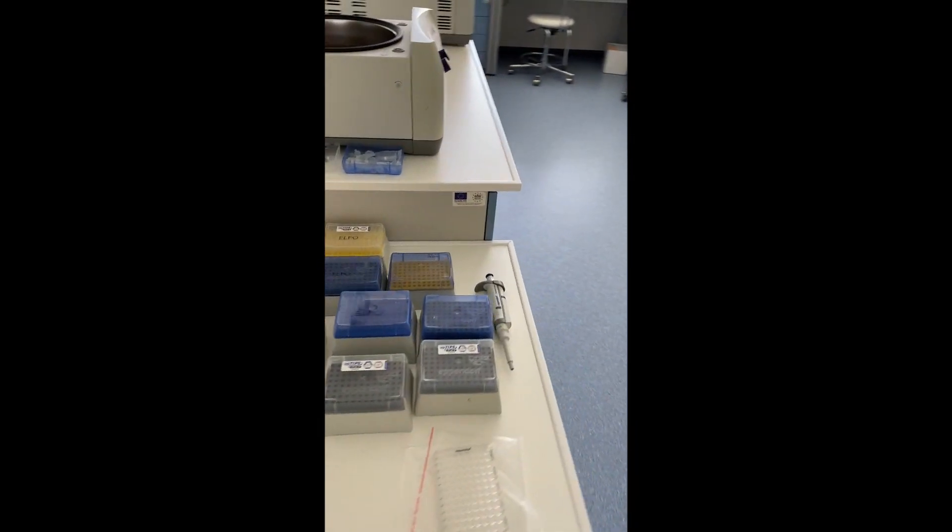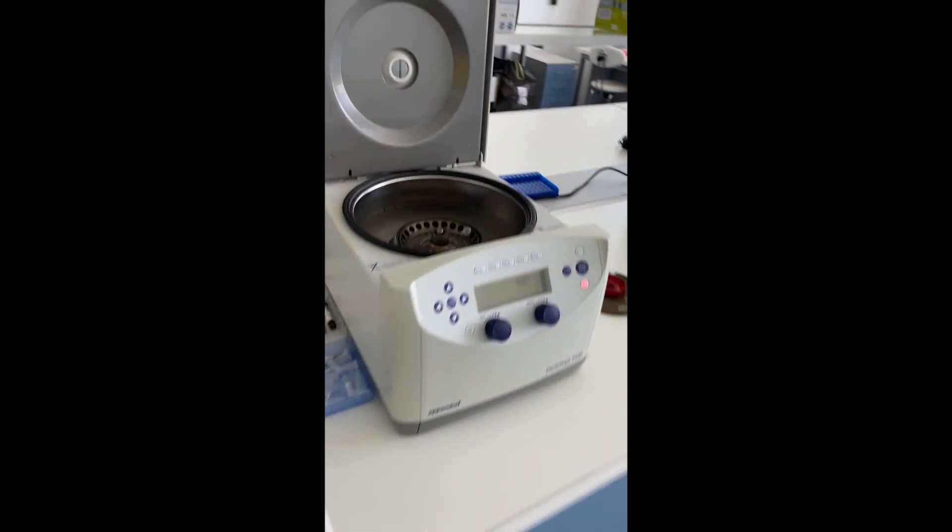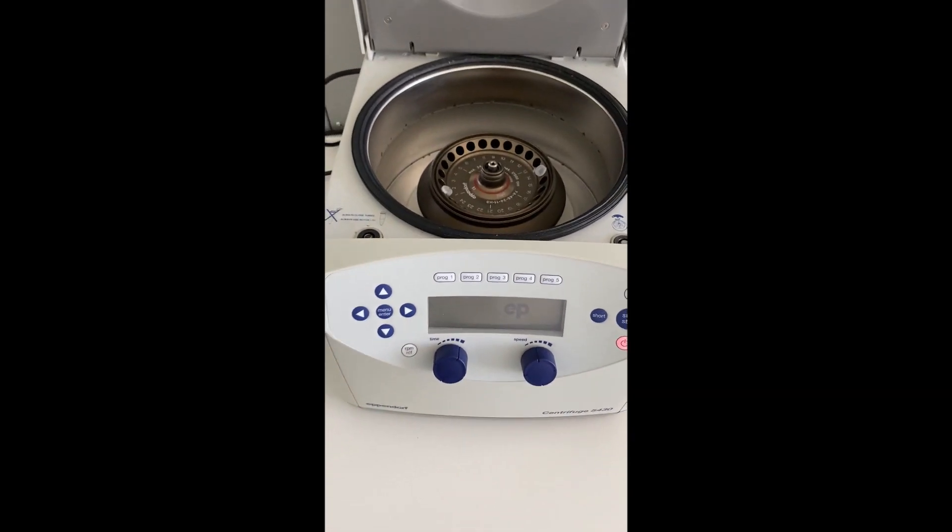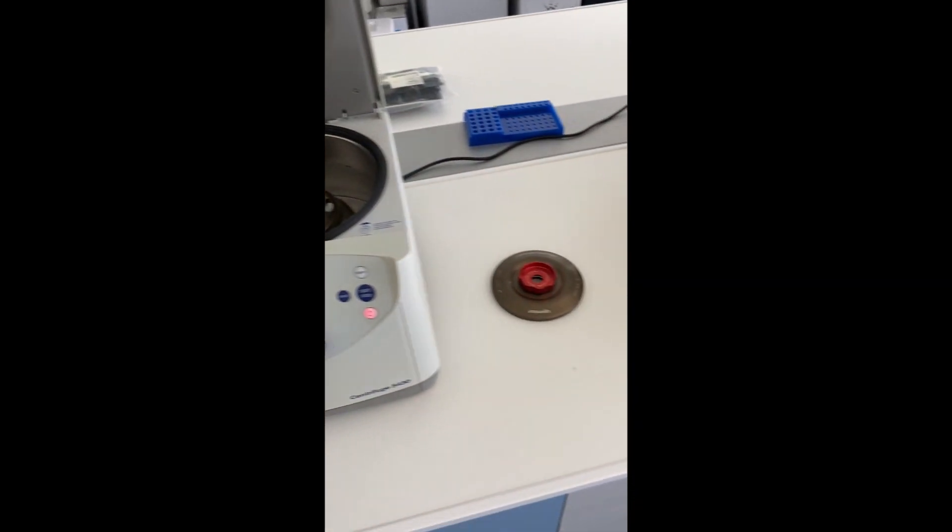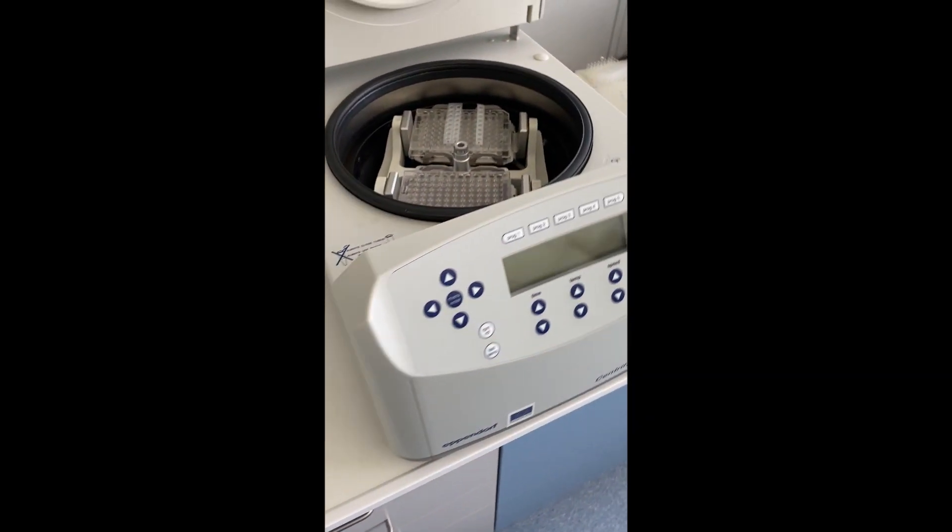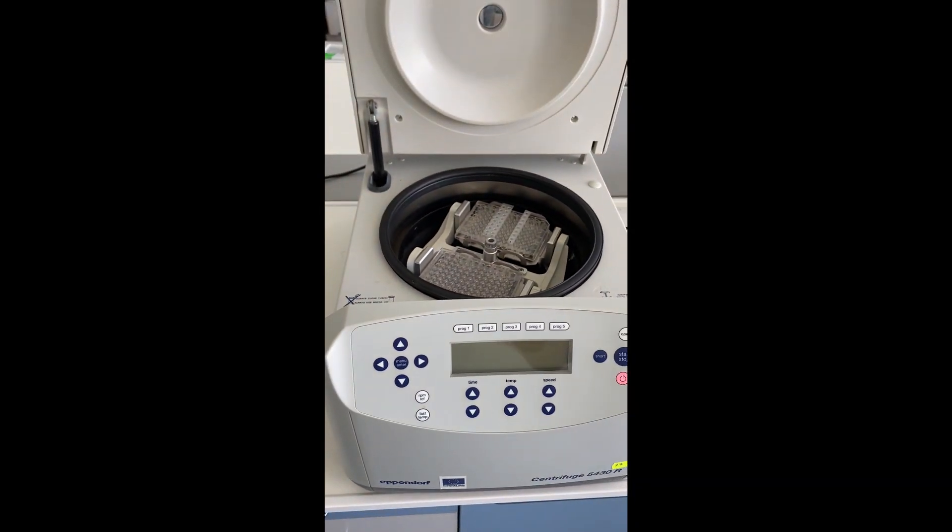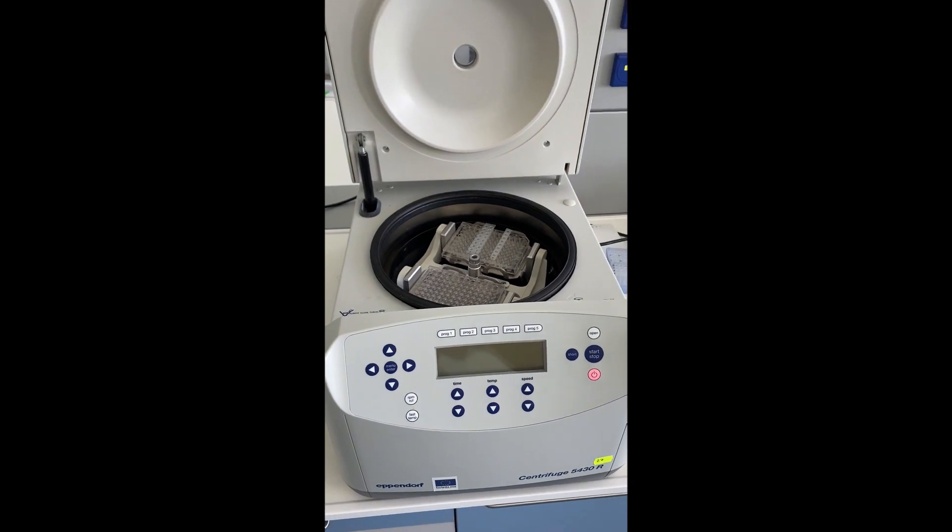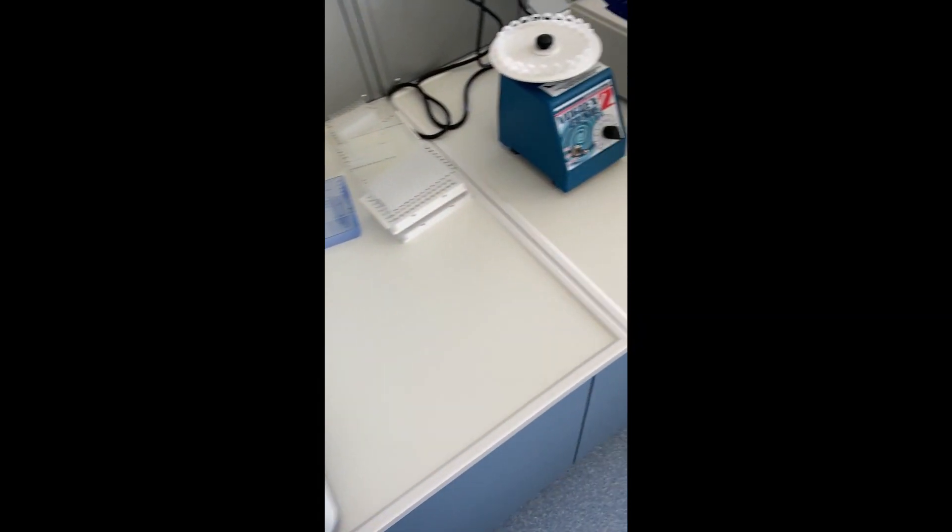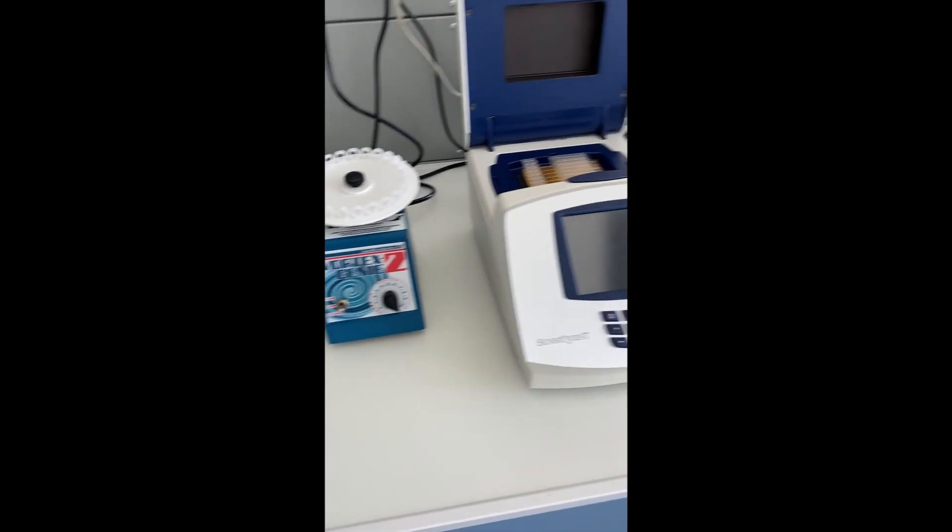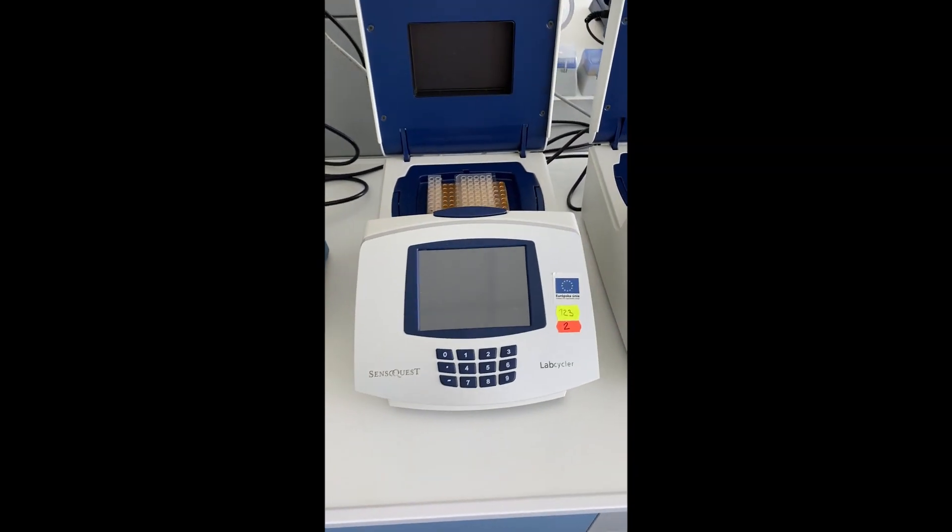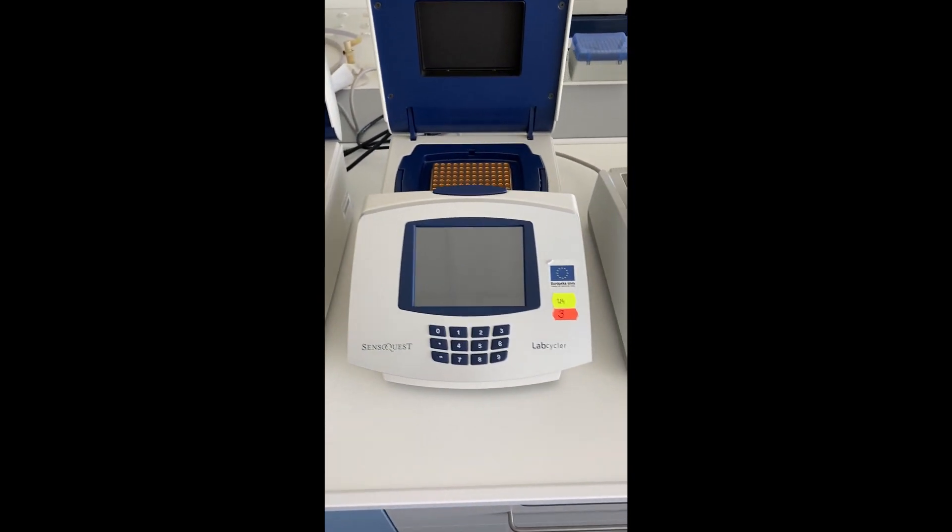Here you can see various types of centrifuges, a vortex, and PCR cyclers designed for microtiter plates, as well as thermoblocks.